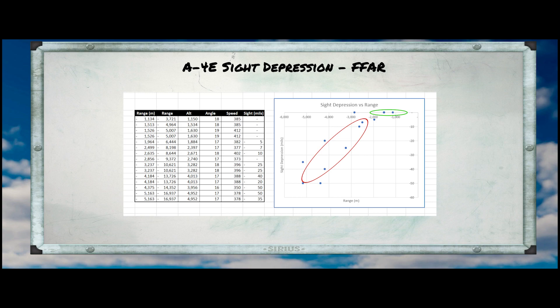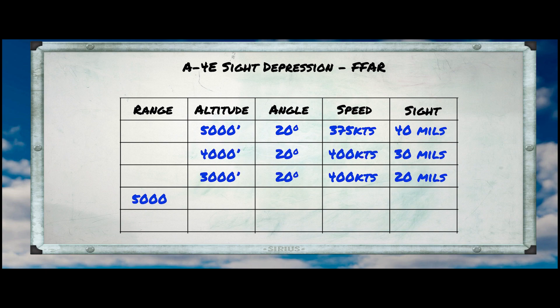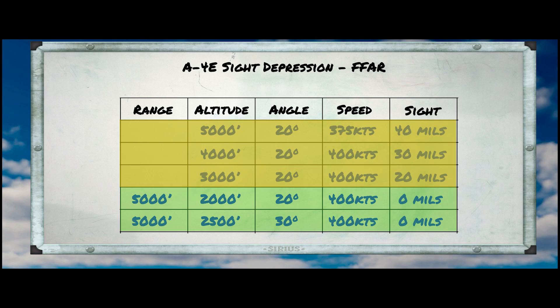That is actually a lot closer than I had typically been trying to use them, which may explain why I didn't have a lot of success. Here is the sight depression table I'd recommend for FFARs in the A-4. I've added a data point for a 30-degree dive based on the altitude that gives a slant range of 5,000 feet. Basically, I think we should set our sight depression to zero, but stay within this region of the table by keeping no higher than the maximum altitude determined by our dive angle.